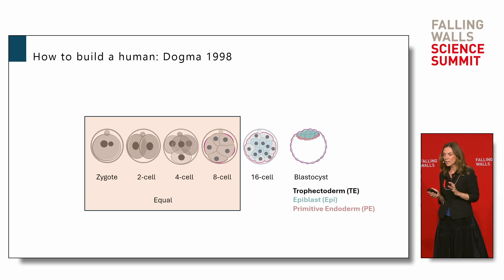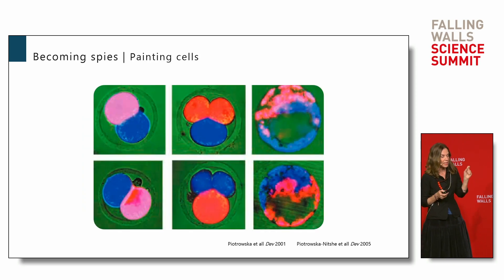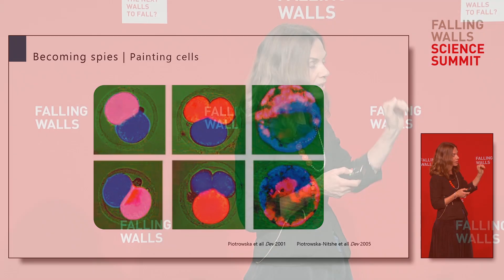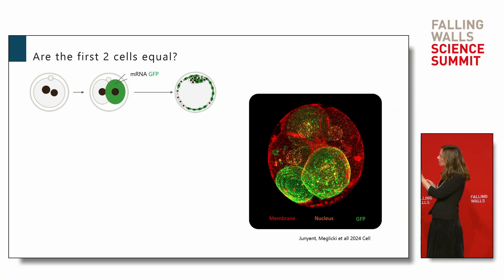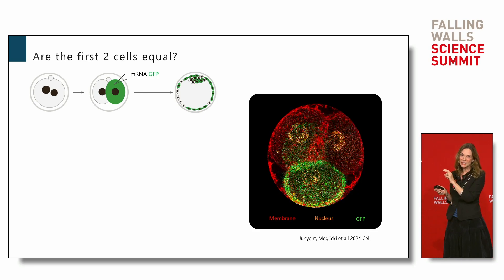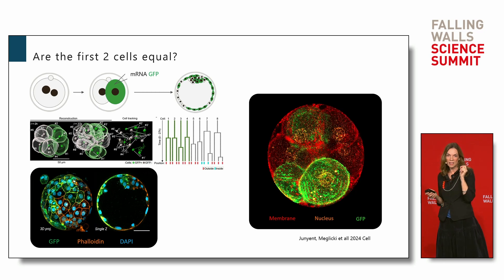There was no way to know this or to label individual cells to follow their fate. So the first wall I had to break was to establish a system to paint individual cells. We do it in two ways: either by putting external markers on cells to follow their fate, or by microinjecting fluorescent proteins that fluoresce green when we shine blue light with the microscope. We did this first in the mouse and then got access to surplus IVF human embryos donated for research, microinjecting them with fluorescent markers and making time-lapse movies to follow each cell from birth until its destiny was decided.